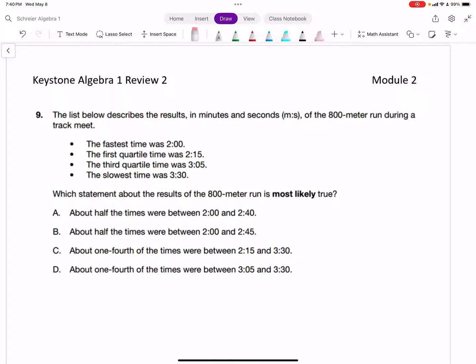Welcome to our last review for our Keystone exam, finishing up with module two. Problem 9: The list describes results in minutes and seconds of the 800-meter run during a track meet. We're given the fastest time, first quartile, third quartile, and slowest time, and asked which statement about the results is most likely true.